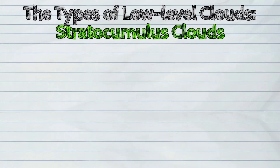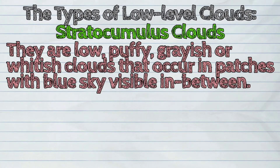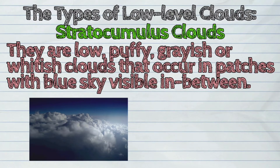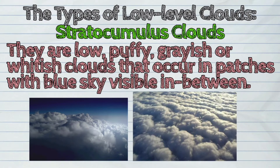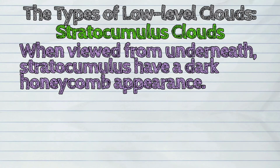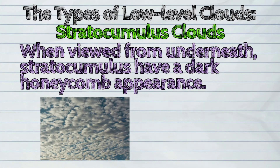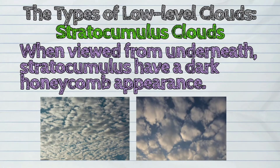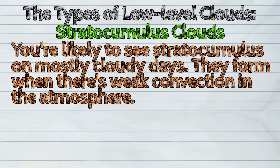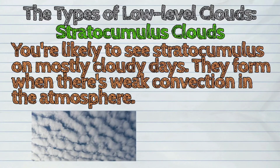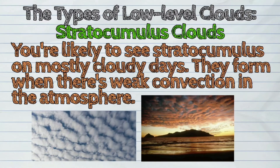Third, the stratocumulus clouds. They are low, puffy, grayish or whitish clouds that occur in patches with blue sky visible in between. When viewed from underneath, stratocumulus have a dark honeycomb appearance. You are likely to see stratocumulus on mostly cloudy days. They form when there is weak convection in the atmosphere.